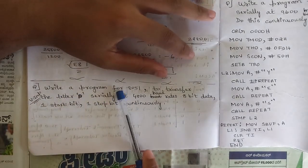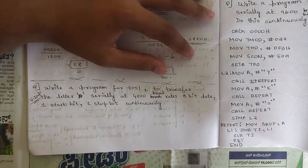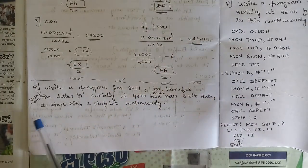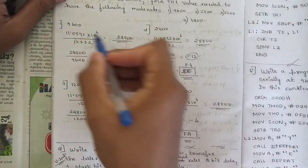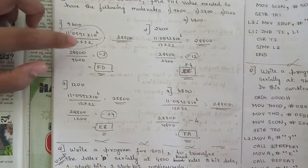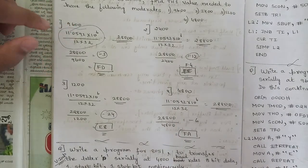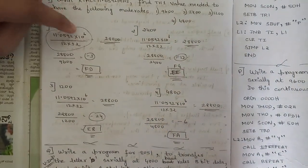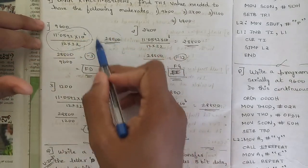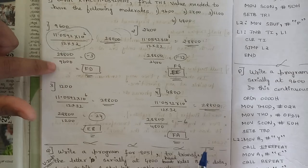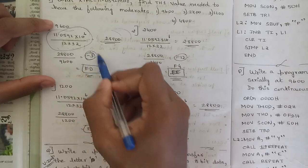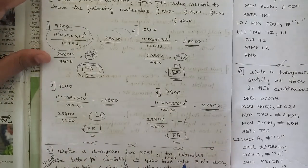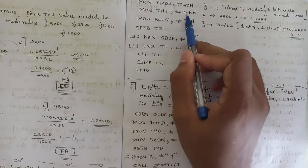An important program is to transfer a letter serially with a given baud rate, 8-bit data, one start bit, one stop bit, continuously. For baud rate calculation, the fixed formula is: 11.0592 × 10^6 divided by (12 × 32), which gives 28800 as a fixed value. Divide 28800 by the given baud rate, take the negative of the result — for example if the answer is 3, write −3 — and represent that in hexadecimal (e.g., FDH). That value is stored in TH1.